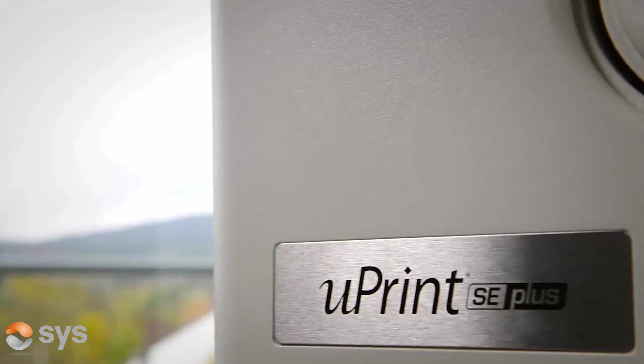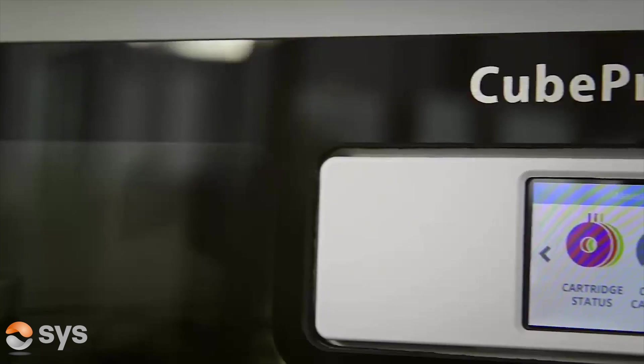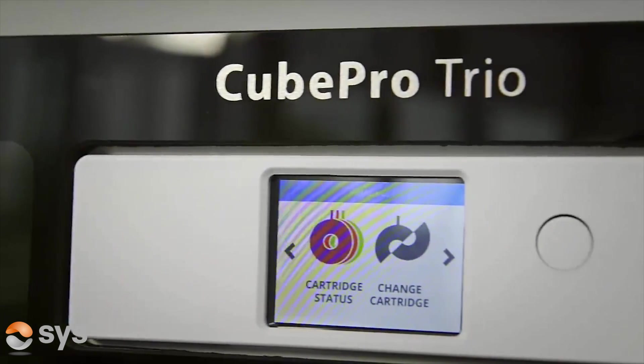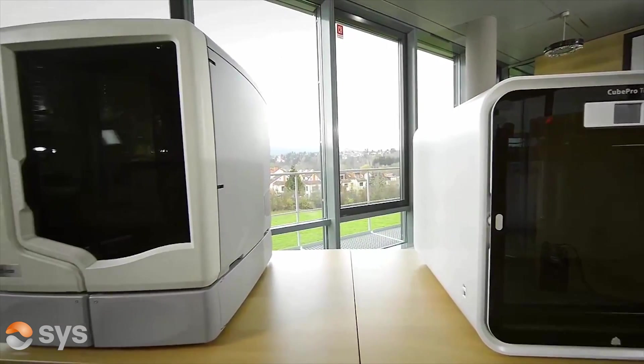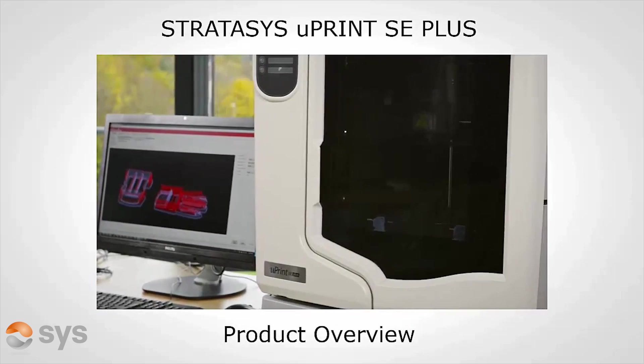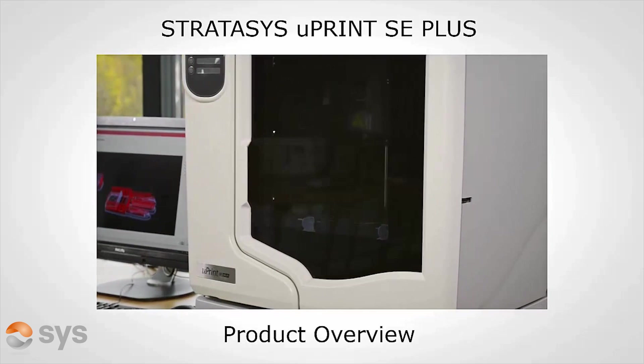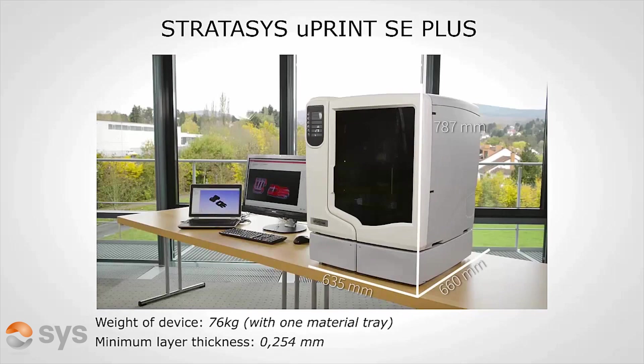During the comparison we will not look into detailed specifications of speeds and feeds but compare and look at different aspects with regard to real-world usability. When we look at the Uprint SE Plus, it's bigger in terms of height than the Cube Pro but does have a similar overall footprint and is certainly heavier by some 30 kilograms.